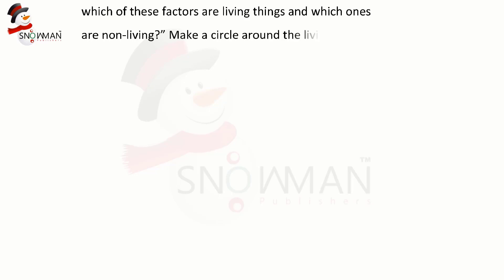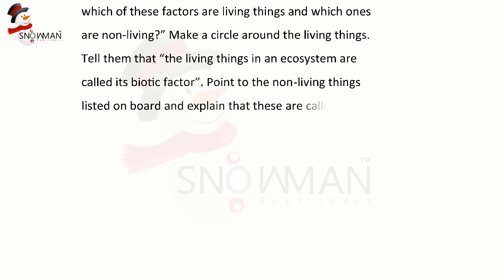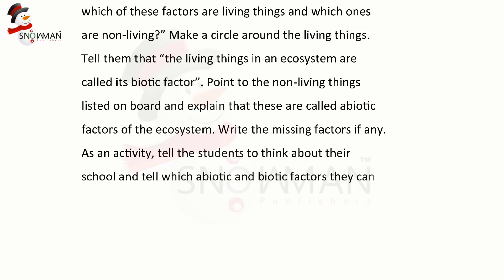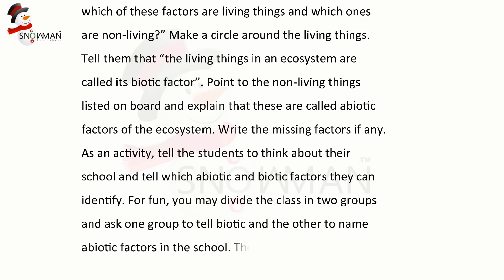Make a circle around the living things. Tell them that the living things in an ecosystem are called its biotic factors. Point to the non-living things listed on the board and explain that these are called the abiotic factors of the ecosystem. Write the missing factors if any. As an activity, tell the students to think about the school and tell which biotic and abiotic factors they can identify. For fun, you may divide the class into two groups and ask one group to tell biotic and the other to name the abiotic factors in the school. The group with the longer list wins.